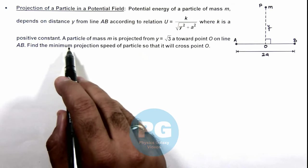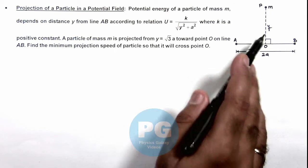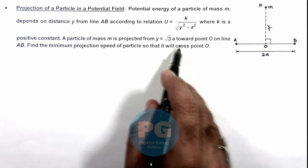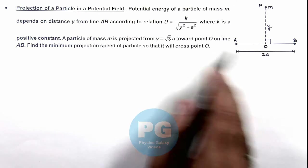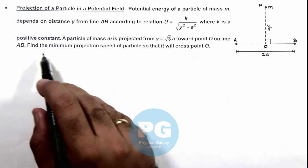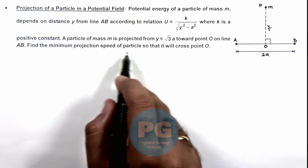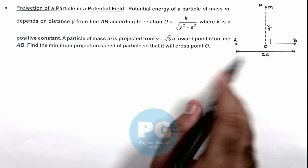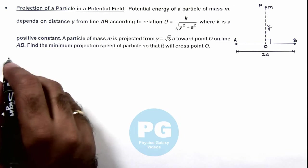It is given that a particle of mass m is projected from y equals root 3 a toward point O on line AB. We are required to find the minimum projection speed of the particle so that it will cross point O, which is the midpoint of line AB.